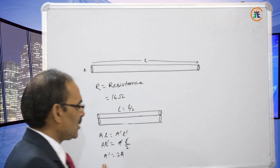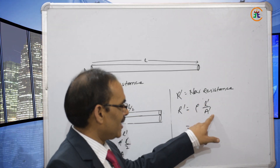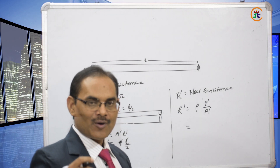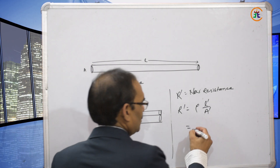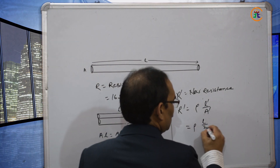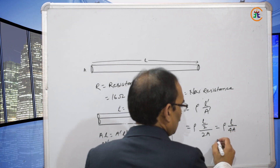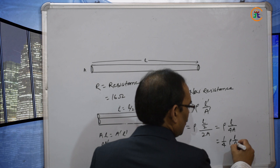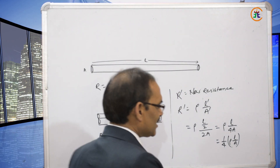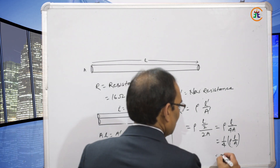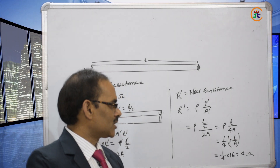The new resistance R' = ρl'/A' = ρ(l/2)/(2A) = (1/4) × (ρl/A). Since ρl/A is the original resistance equal to 16Ω, therefore R' = (1/4) × 16 = 4 ohms. The new resistance of the conductor is 4 ohms. Thank you.